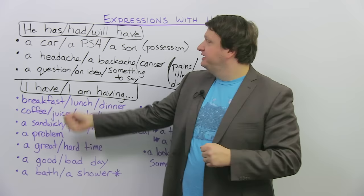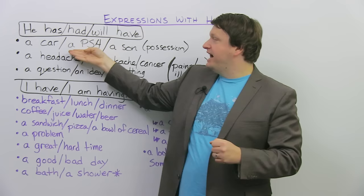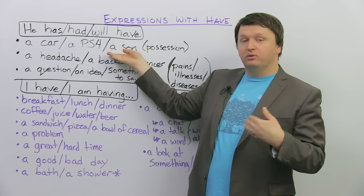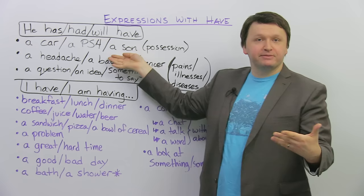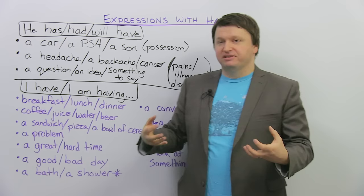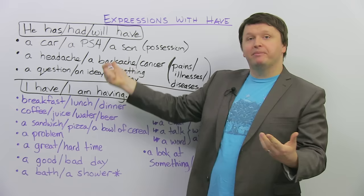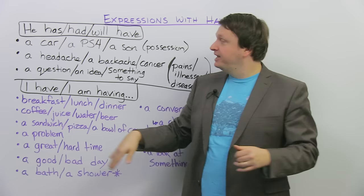And like I said, possession. Here, he has a car. He had a PS4. He has a son, or he will have a son if his wife or girlfriend is pregnant, for example. So, here we have possession, something that belongs to you or is yours, or if you have a family member, like I have two sisters, three brothers. This is similar in most languages.